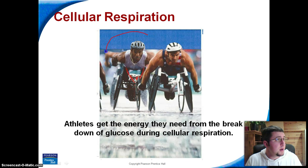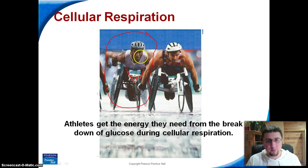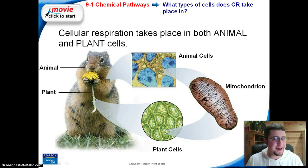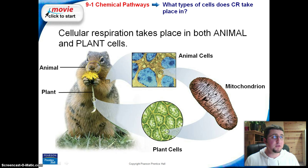So these guys right here are performing cellular respiration at probably very remarkable rates. They are able to break down glucose, which they ate earlier that day, and make energy out of it. Cellular respiration is something that occurs in both plants and animals. Here I have a diagram of a squirrel eating a flower — the flower is the plant and the squirrel is the animal. Both of those things actually do have to do cellular respiration in order to get energy.